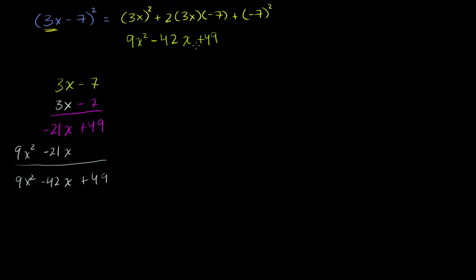So we did indeed get the same answer. Let's do one more, and we'll do it the fast way. So if we have 8x minus 3. Actually, let me do one that has more variables in it. Let's say we had 4x squared plus y squared. And we wanted to square that. Well, same idea.